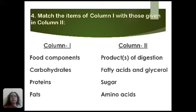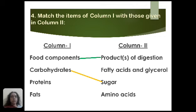The next question is a matching exercise — we match items in column one with column two. Food components match with products of digestion. Carbohydrates are a type of sugar, so carbohydrates match with sugar. Proteins after digestion are converted into the simpler unit known as amino acids, so protein matches with amino acid.